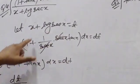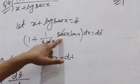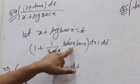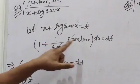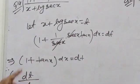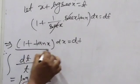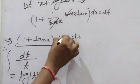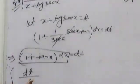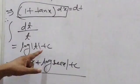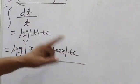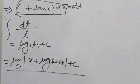Substituting, (1 + tan x) dx = dT and denominator = T, so we get dT/T = log|T| + C = log|x + log cos x| + C. This is the answer.